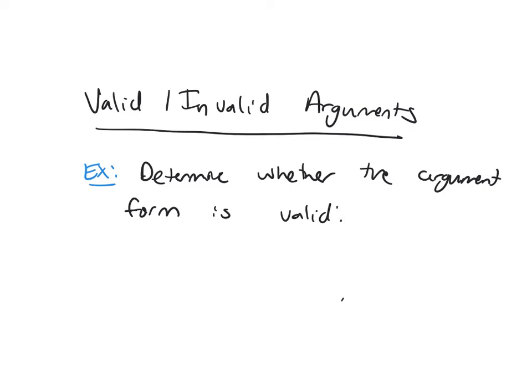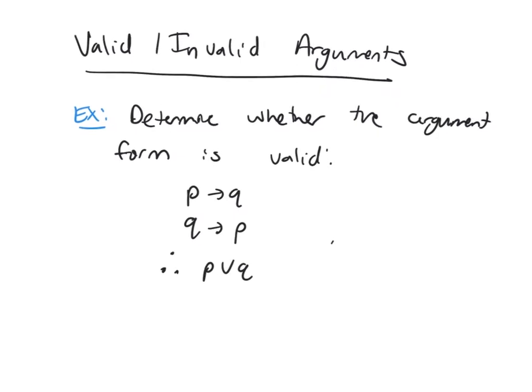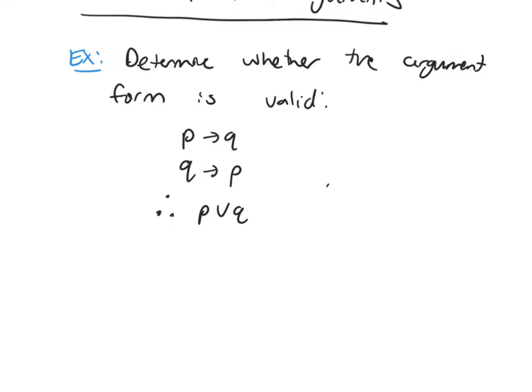So the argument form is going to be if P then Q, if Q then P, therefore P or Q. Remember one way we did this was through truth tables, and so we're going to use truth tables here.